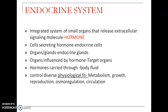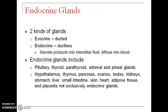The cells that secrete hormones are called endocrine cells, and the gland or organ is called an endocrine gland, while the organs that get influenced are called target organs. Hormones are carried through the body fluids and bring about a great influence on physiological functions like metabolism, growth, reproduction, osmoregulation, and circulation.